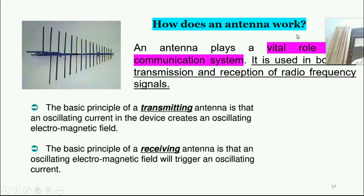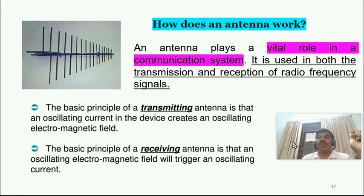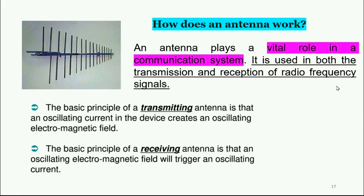An antenna plays a vital role in a communication system, used for both transmission and reception of radio frequency signals. The principle of a transmitting antenna is that an oscillating current in the device creates an oscillating electromagnetic field. The receiving antenna does the reverse: the oscillating electromagnetic field triggers an oscillating current. That is the principle of an antenna.